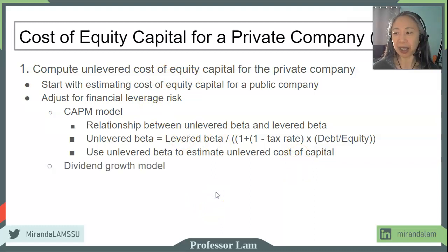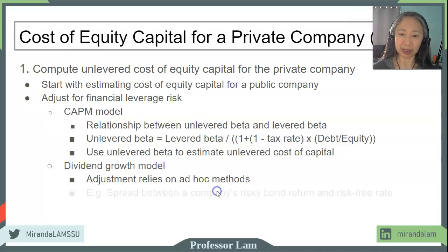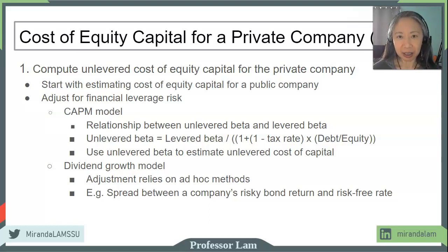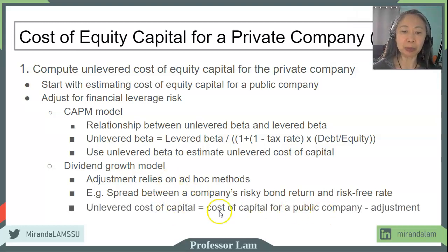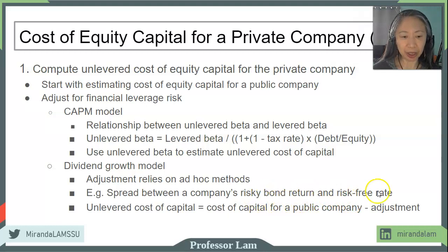If you use the dividend growth model, the adjustment for financial risk is less precise and relies on some form of ad hoc method. For example, you can estimate the difference between the company's risky bond versus the risk-free rate — that represents the risk of financial leverage for the firm. Your unlevered cost of equity will be the cost of capital for the public firm minus this risky bond premium. Either approach will give you an estimate for a private company.